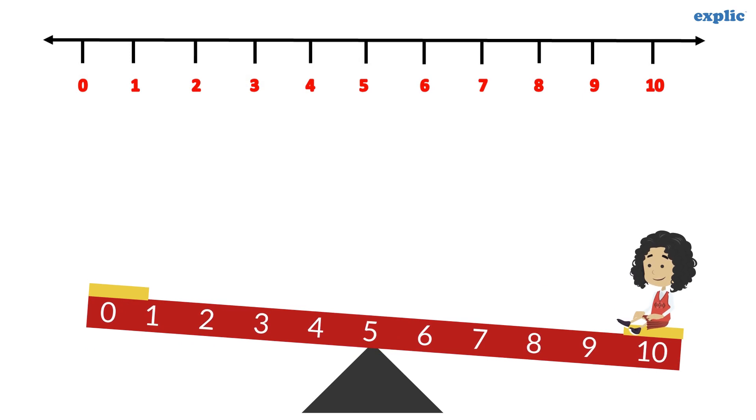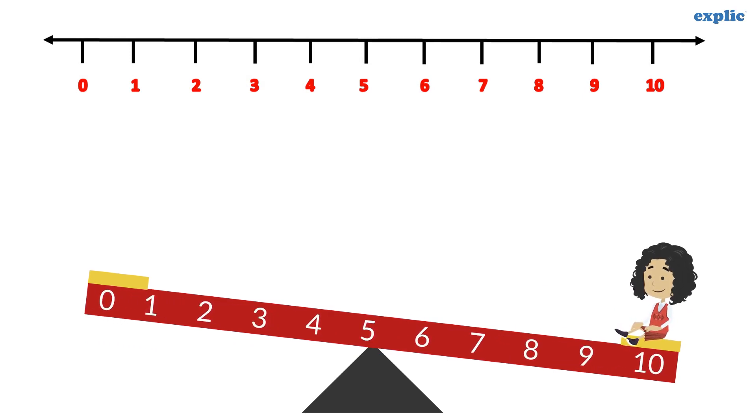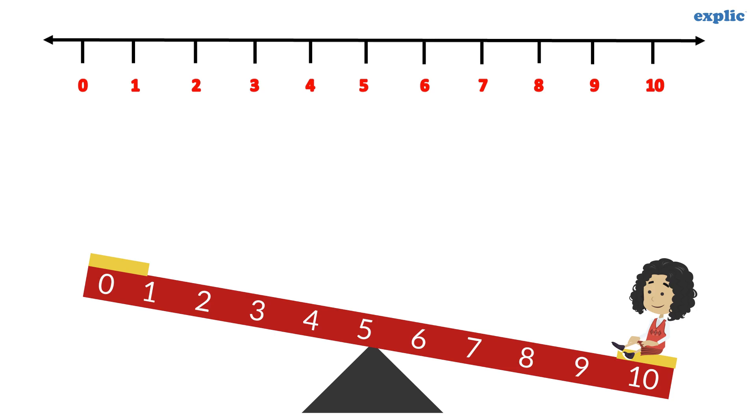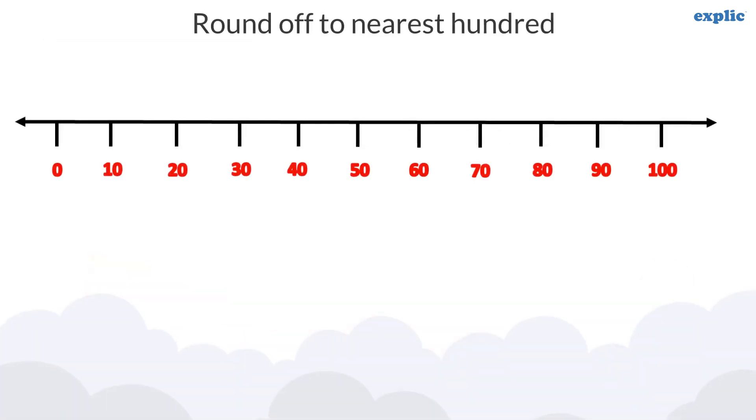Similarly, if she is on the right side, which is marked from 5 to 10, which end of the seesaw will go down? 10 end will go down. Therefore, numbers 5 to 10 can be rounded off to 10, which is also called rounding up. Since 5 is in the middle, it would be rounded up.